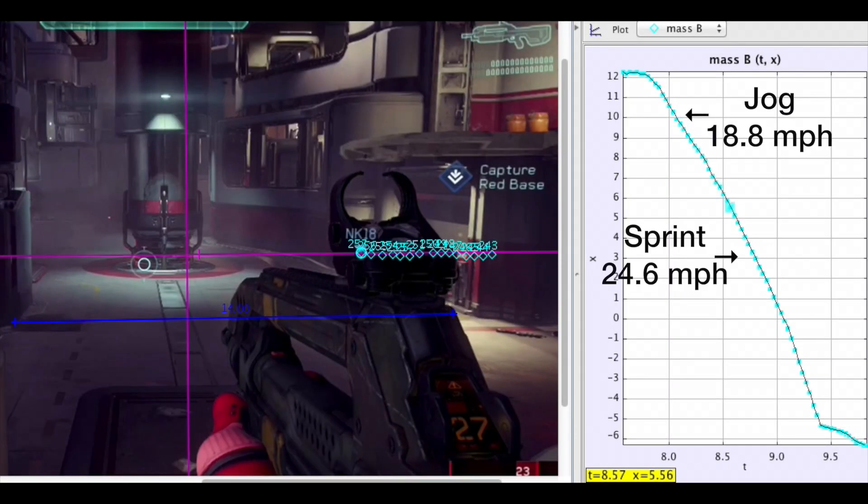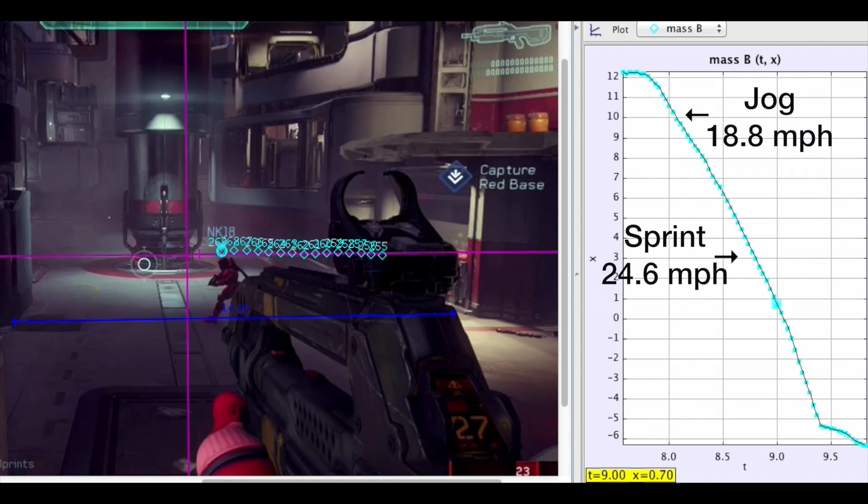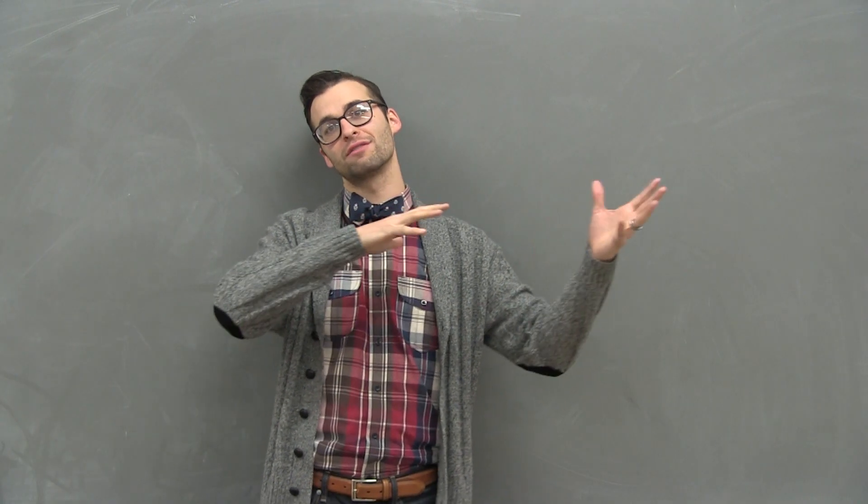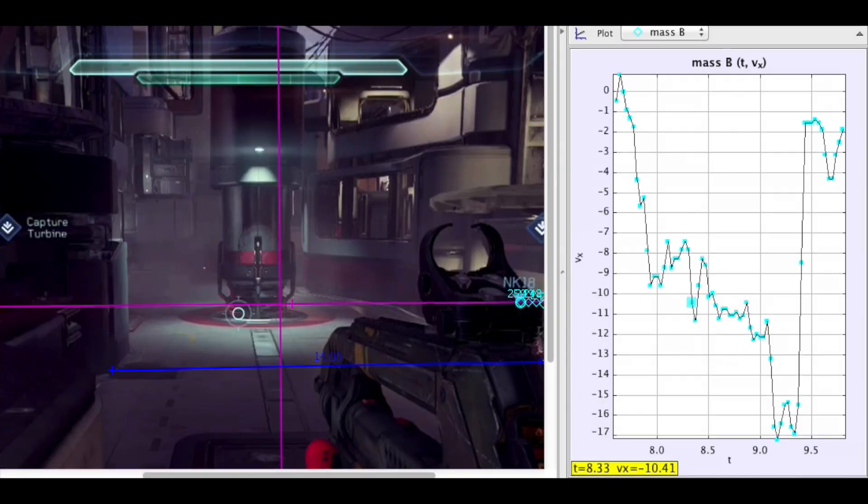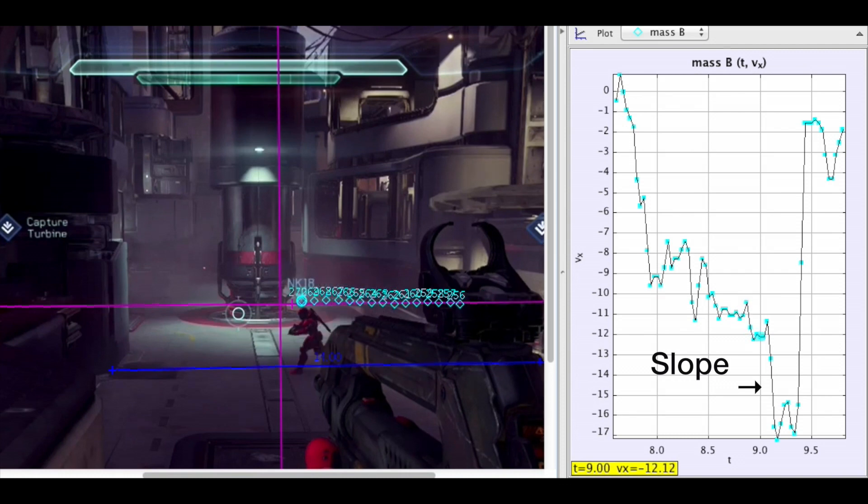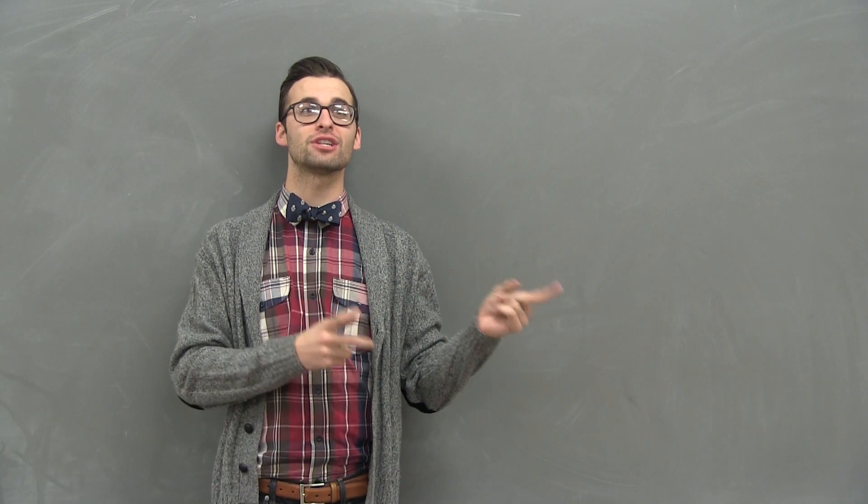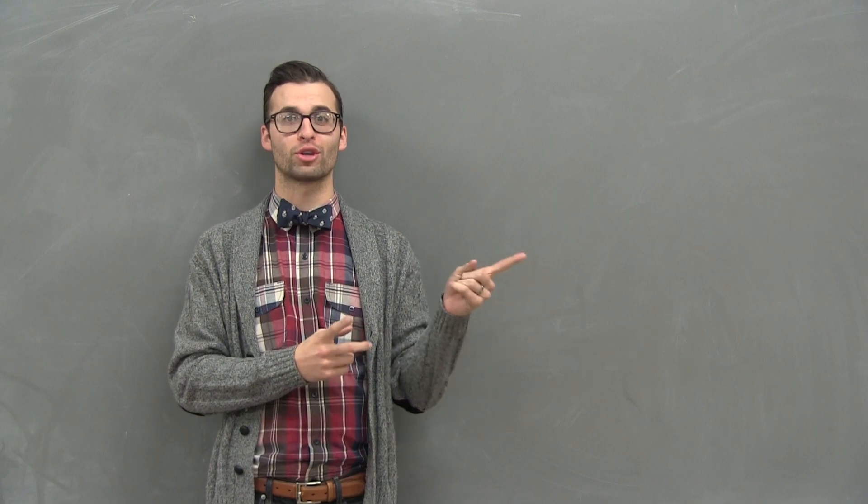And what I was most interested to see is what kind of acceleration does the player experience during this thrust. And I analyzed the velocity versus time graph. And we know that the slope of a velocity versus time graph tells us the acceleration. And I got about 78 meters per second squared. This is almost 8 G's of acceleration. Here's what 8 G's of acceleration does to normal humans.